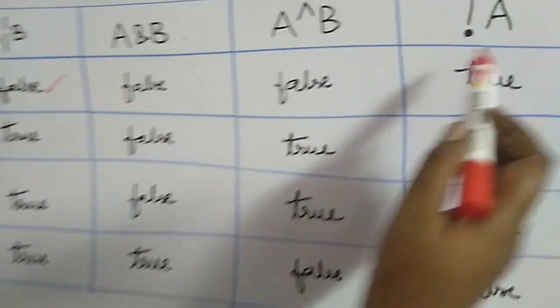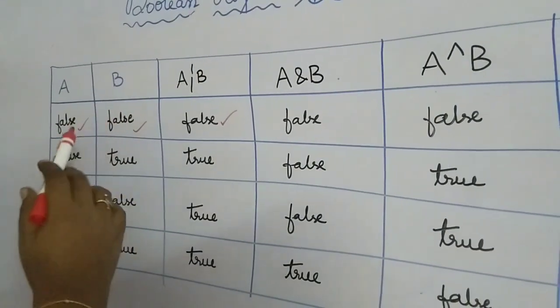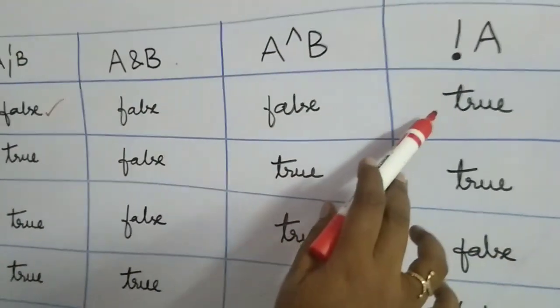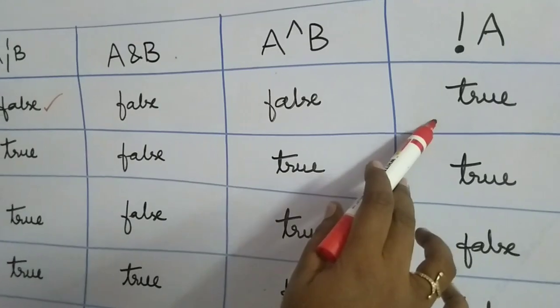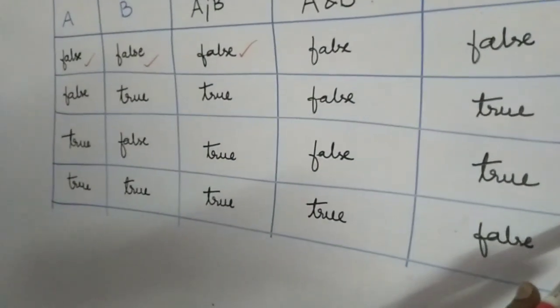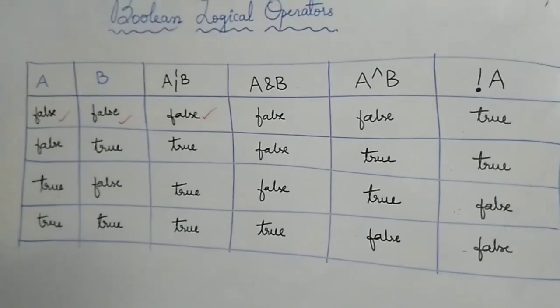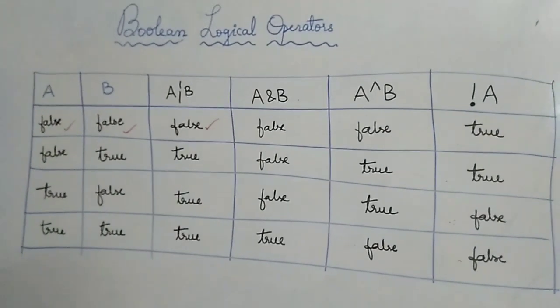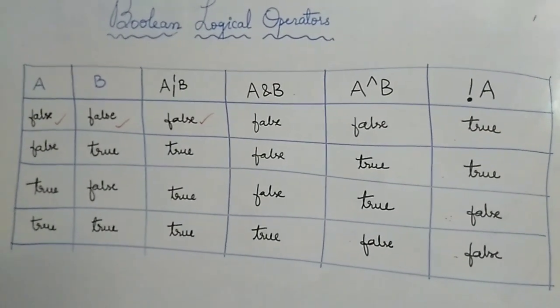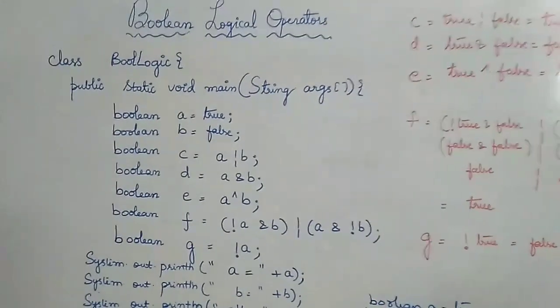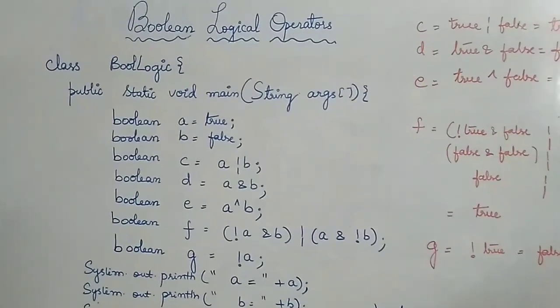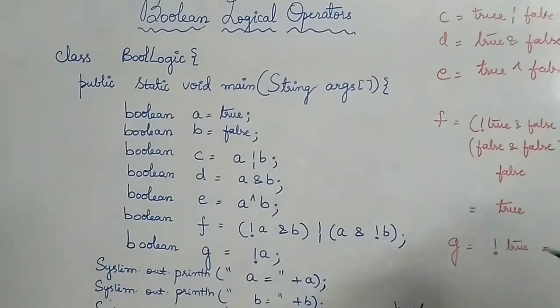For NOT, it is the inverse: if it is false and we say NOT A, it will be true. If it is true, NOT A will be false. Just keep this in mind so we can work through the examples. Now take a look at this particular program.